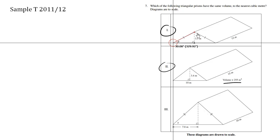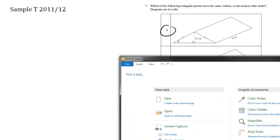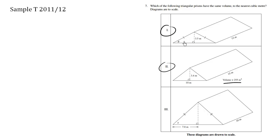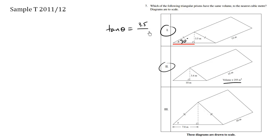So we say theta is 30 degrees, and we can then use our SOHCAHTOA triangles to solve for this side. Since we're dealing with the opposite and the adjacent, we use tangent. Tan theta equals opposite over adjacent — the opposite here is 3.5 meters, over the adjacent, which is the length we're trying to find. We'll call this x.